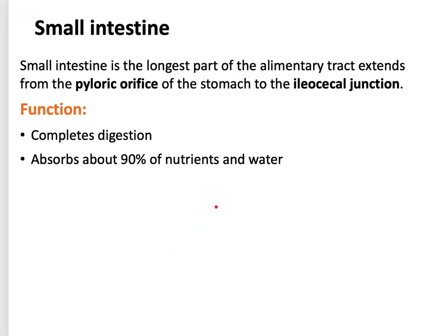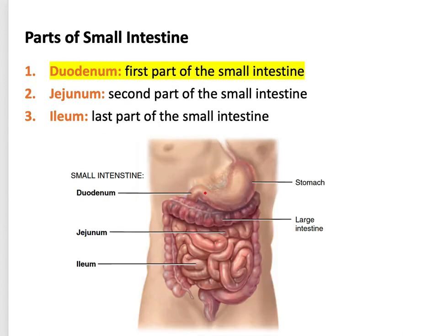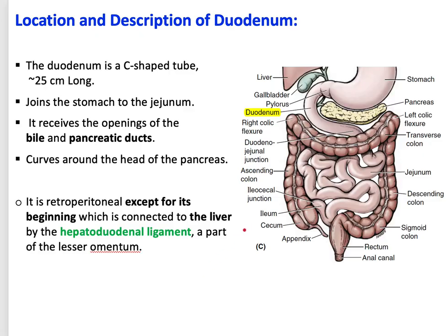First of all, the small intestine is the longest part of the alimentary tract and GI system. It starts from the pyloric orifice, from the pylorus of the stomach, until the ileocecal junction. The small intestine has three parts: the first is the duodenum, which continues with the jejunum, then the ileum, until it reaches the ileocecal junction. So we have three parts.